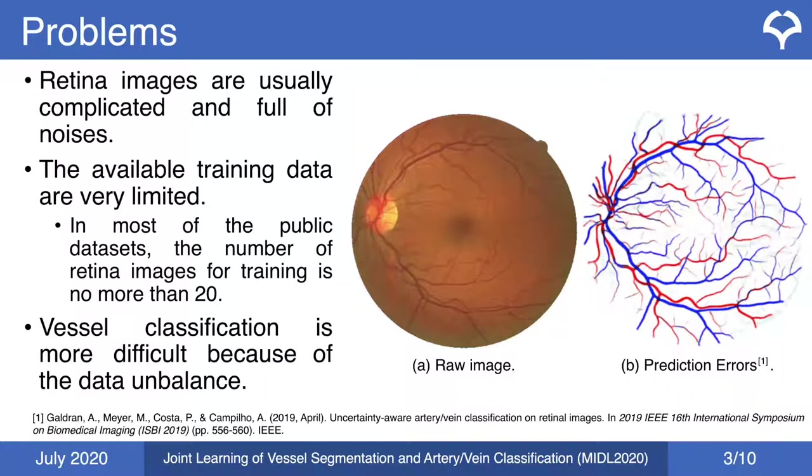This is an example of a raw image and a classified image, where prediction errors can be seen in some parts of the images.